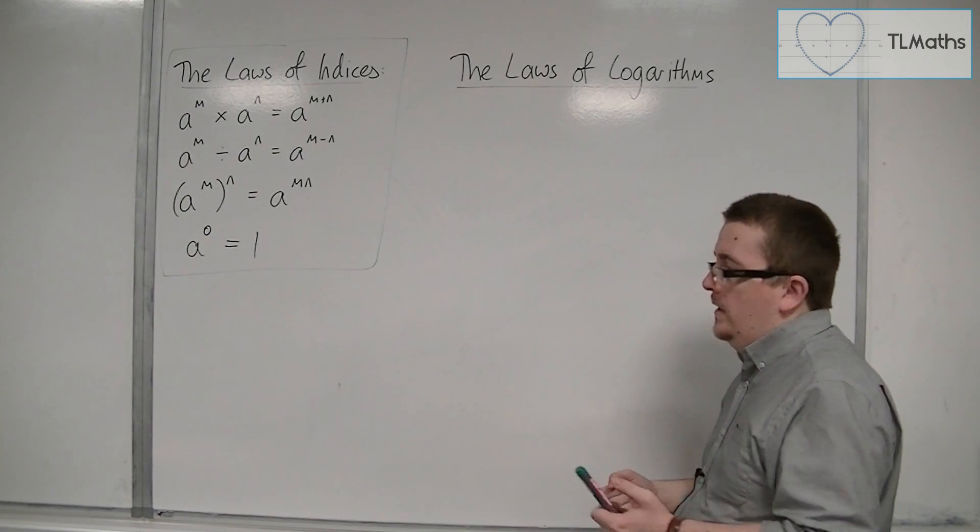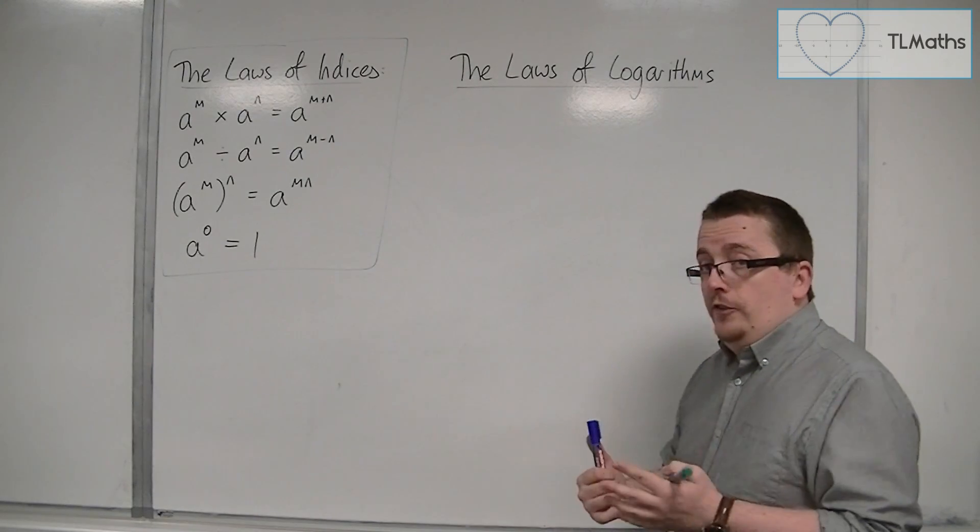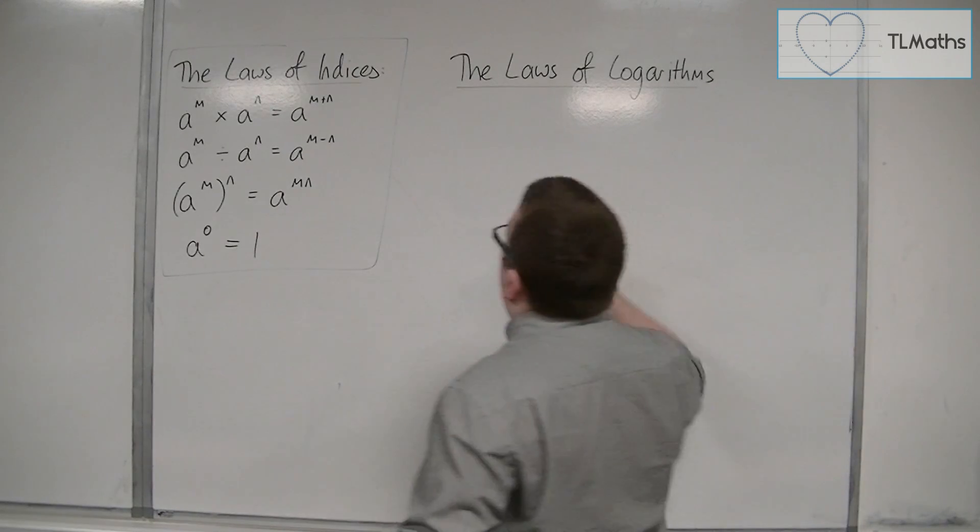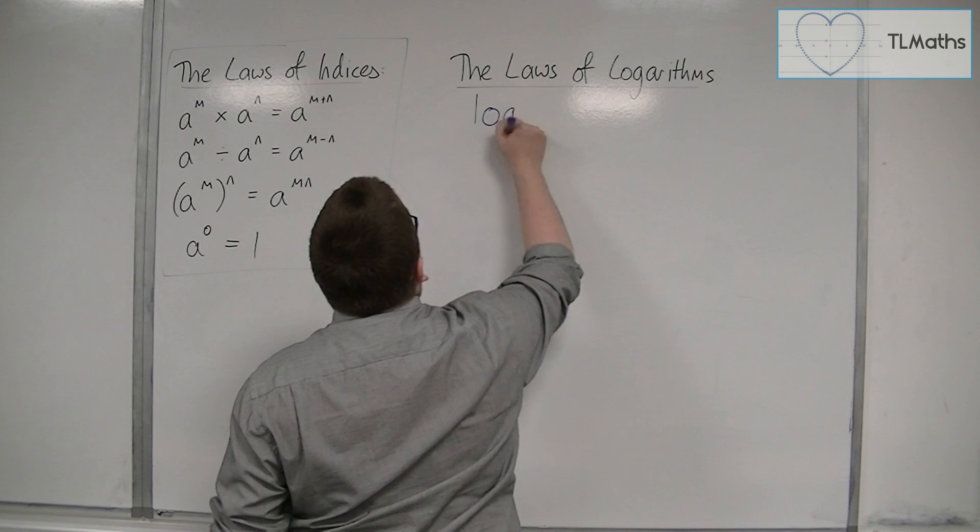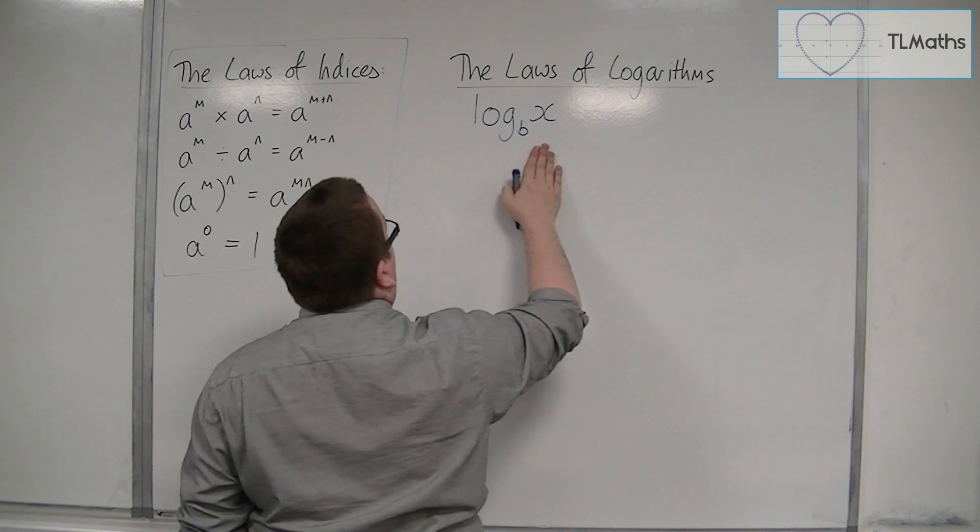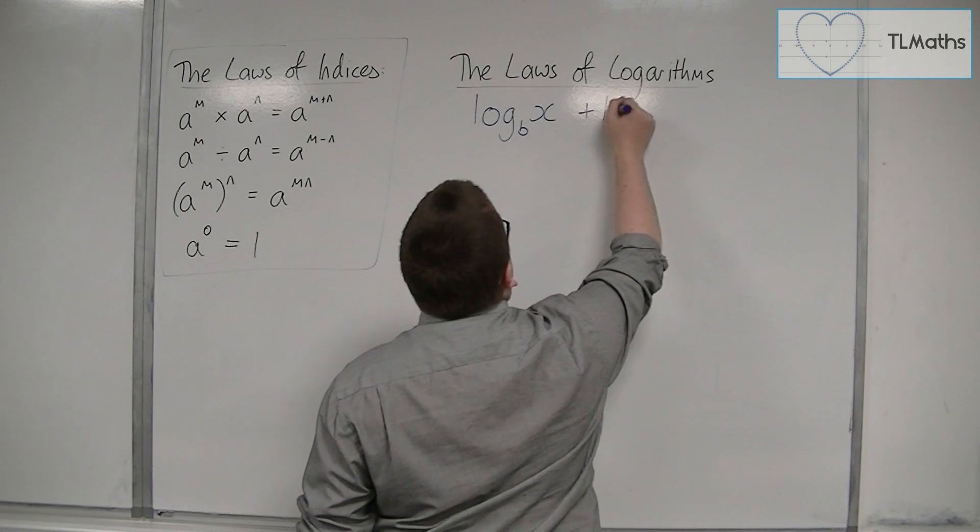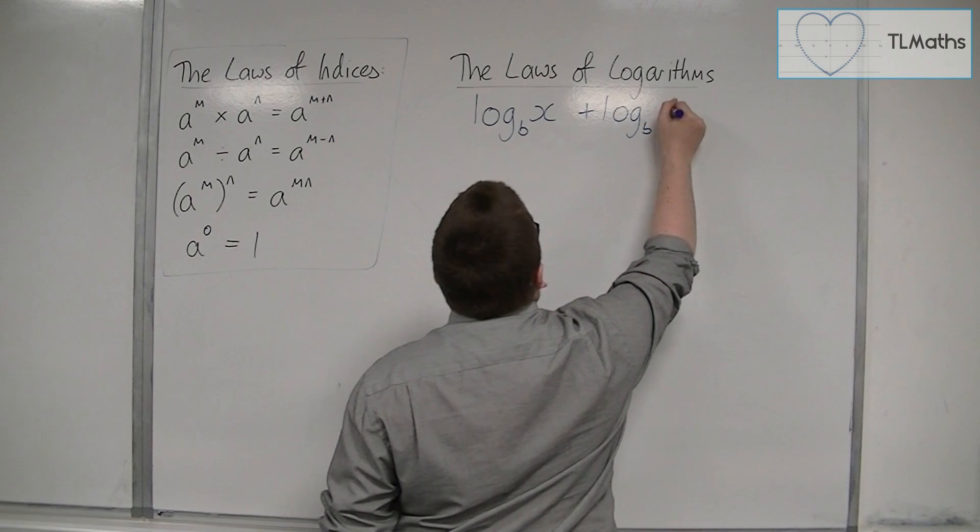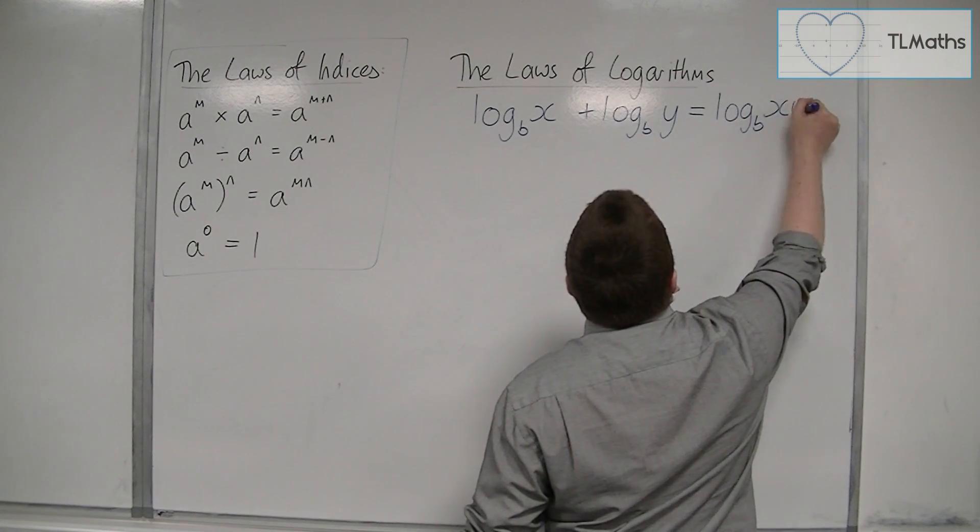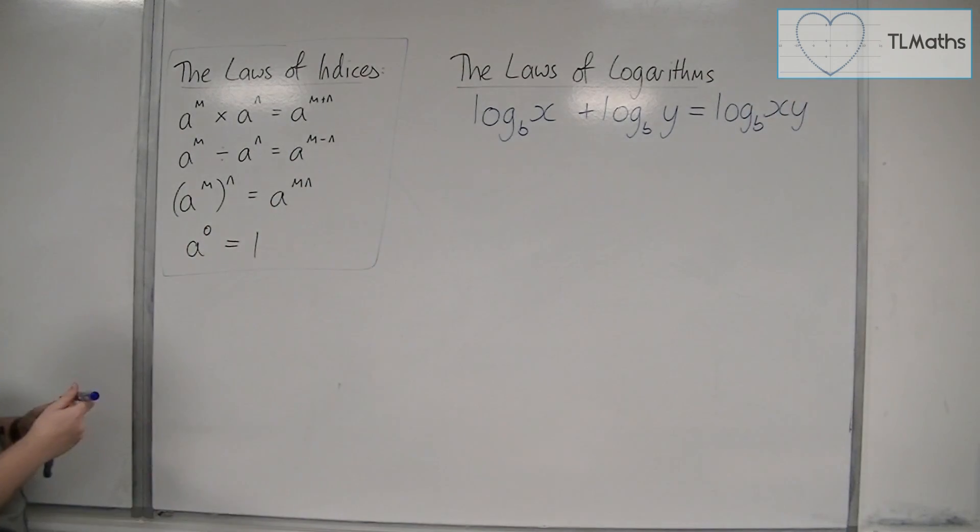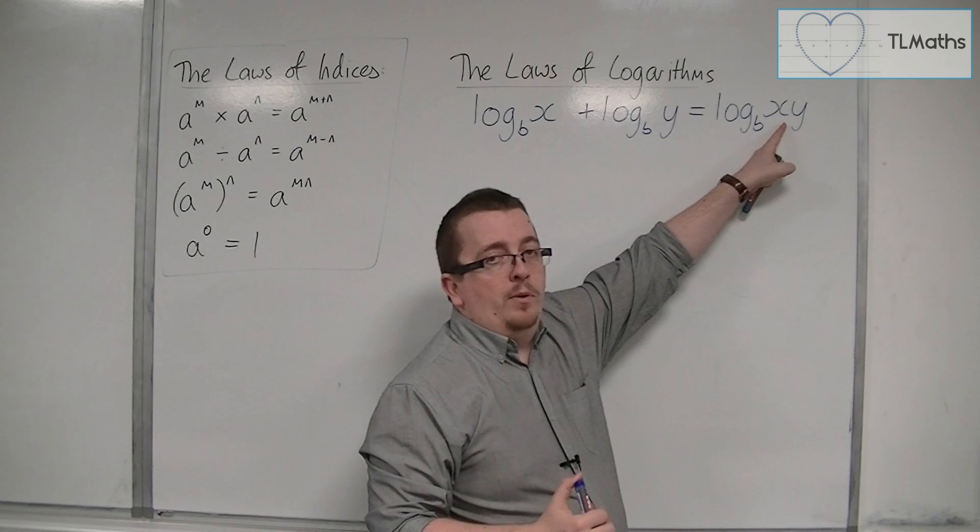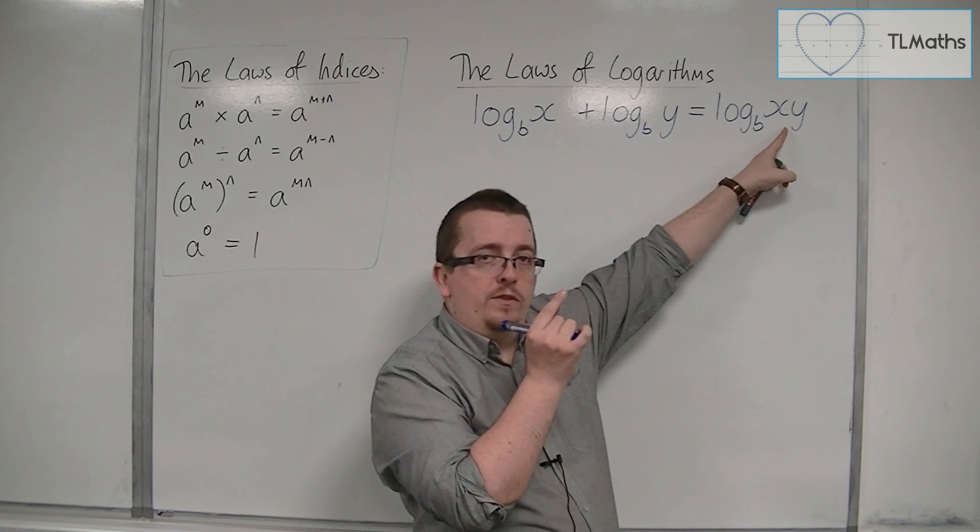And there are. The first one connects with this first law of indices. If you have the same base number for the logarithm, so log base b of x plus log base b of y, then this would be log base b of x times y. When we're adding the logarithms, we are multiplying what is within the logarithms.